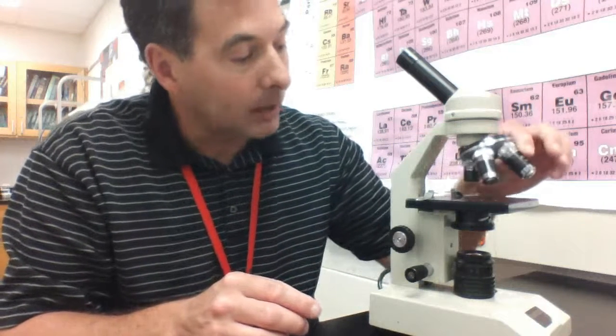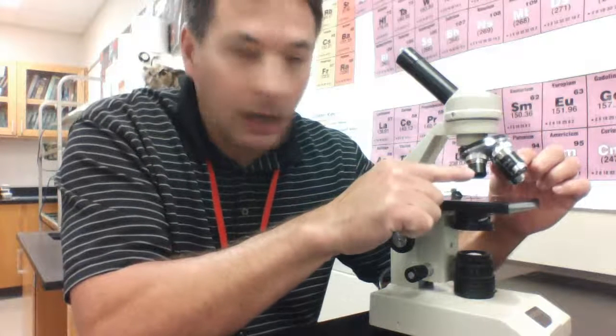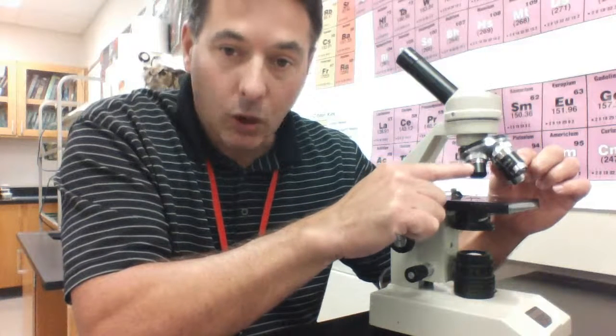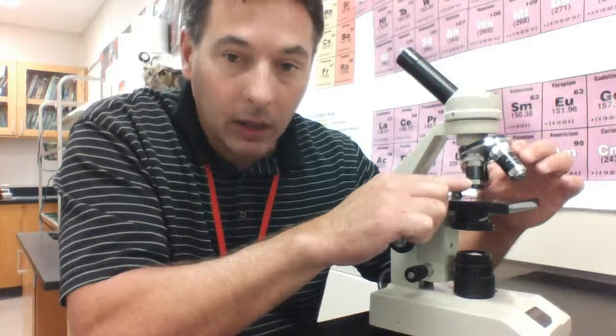Most of our microscopes contain three different objective lenses. The three objective lenses include the smallest lens, which is called the scanning lens. The medium-sized lens is called our low-power lens.